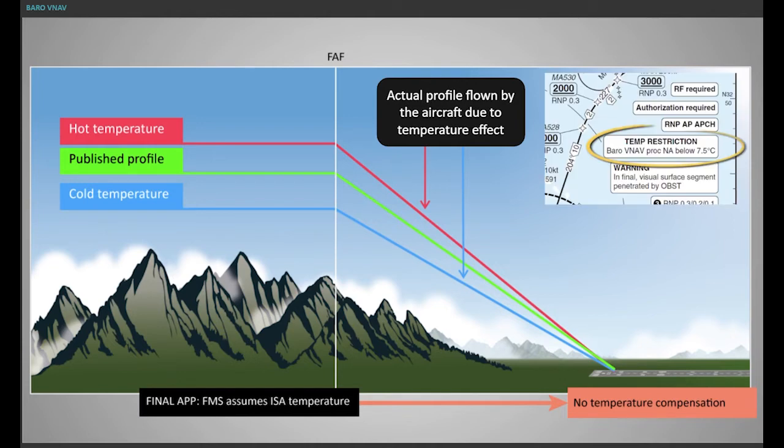In cold temperatures, a minimum outside air temperature, OAT, for which the minimum obstacle clearance remains acceptable in Barrow VNAV final APP mode, must be published.